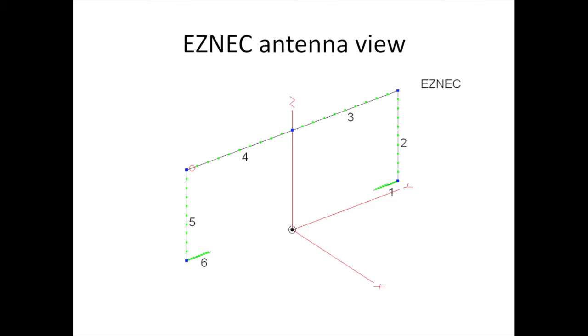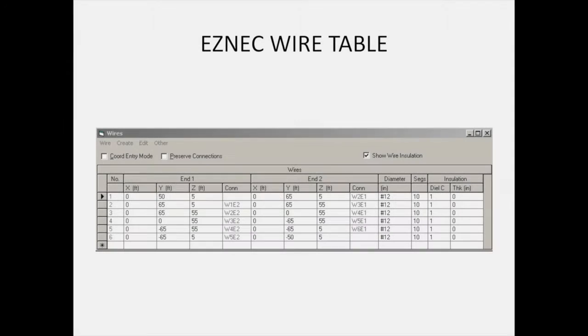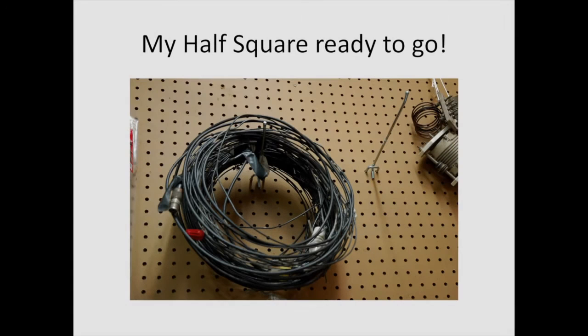This is my EZNEC antenna view. Showing the antenna fed at a top corner with 50 ohm coax. And this is the EZNEC wire table. Pretty simple to model the antenna in EZNEC. This shows the size of the half square. I took it down, rolled it up, hung it on the garage wall, and it's ready to go back up again. Not a whole lot to it. Pretty inexpensive antenna to build.